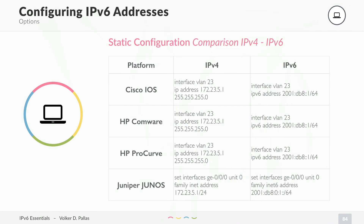Let's have a close look and start with a static configuration, with a comparison. I have included a couple of platforms — Cisco IOS, IPv4 configuration compared to the IPv6 configuration. As you can see, you can enter the VLAN interface and set the IPv4 address and the netmask. In IPv6, because we don't have any netmask anymore, you just enter the interface the same and set the IPv6 address with the slash notation of the prefix length.